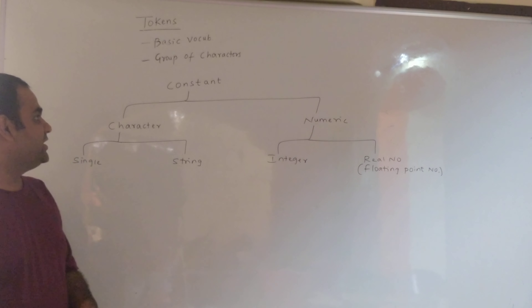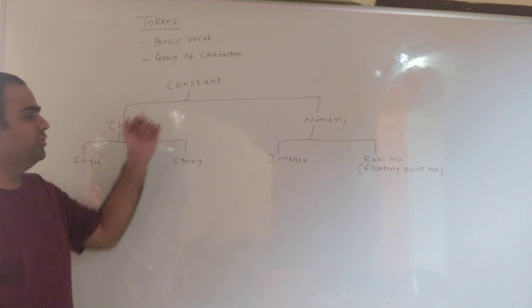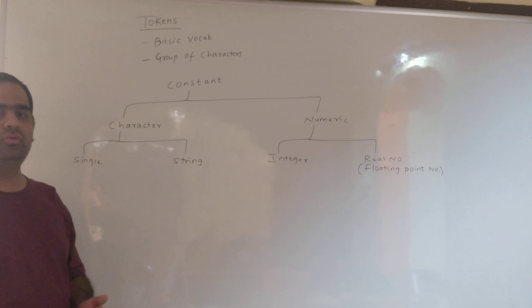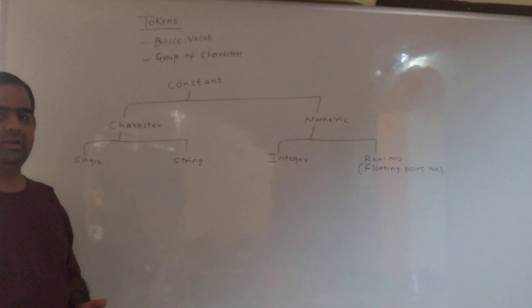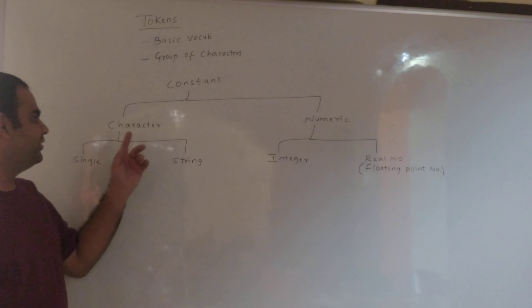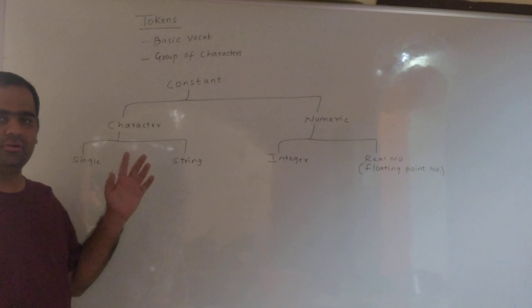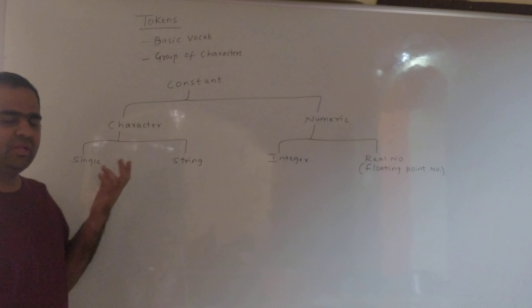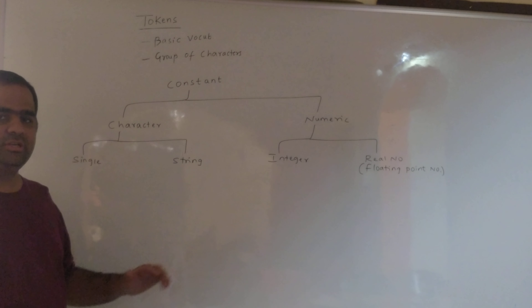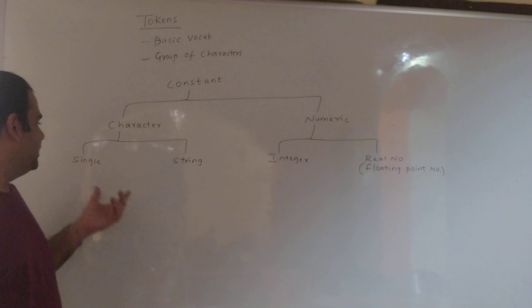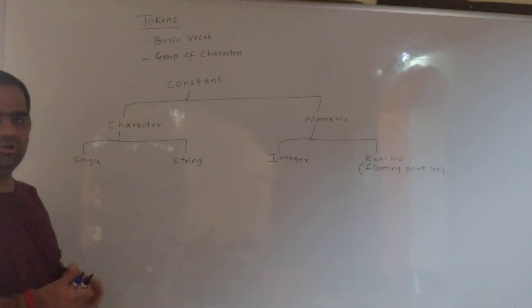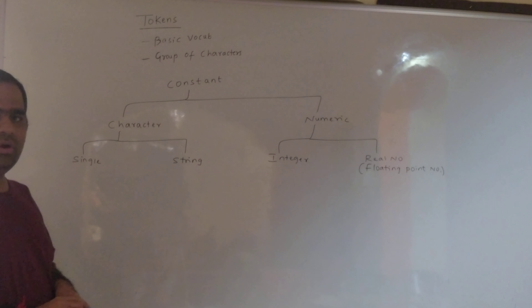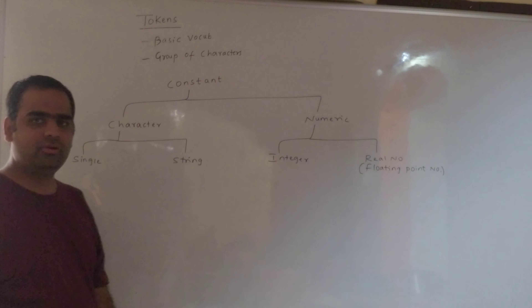The next type of token we will study is a constant. There are two types of constants at a high level. The first one is character constant and the second one is numeric constant. In character constants, we have two types: single character constant and string constant.